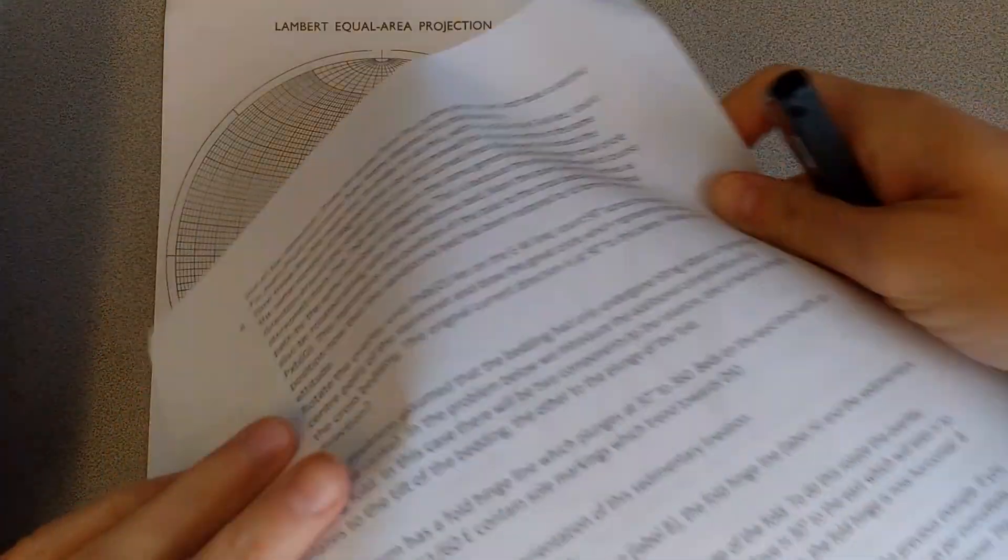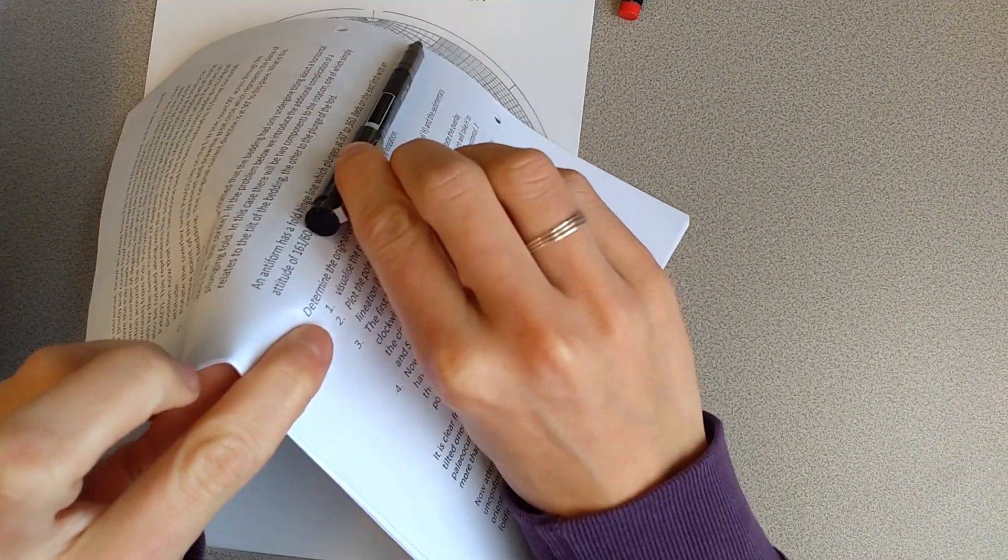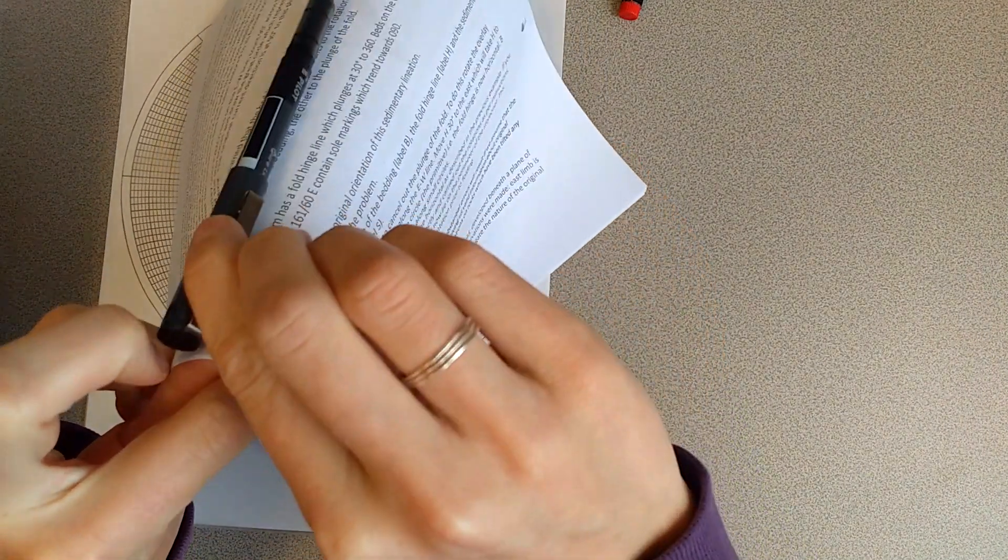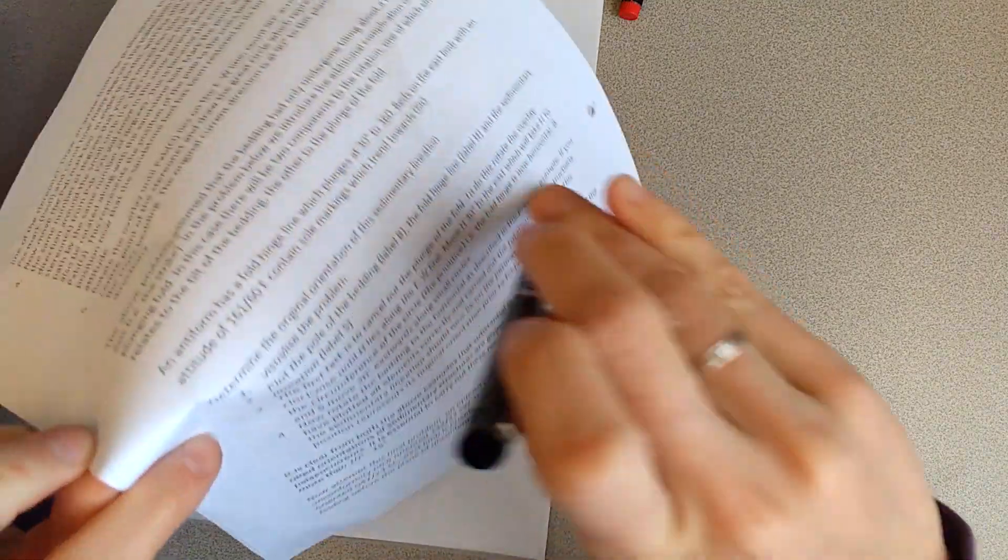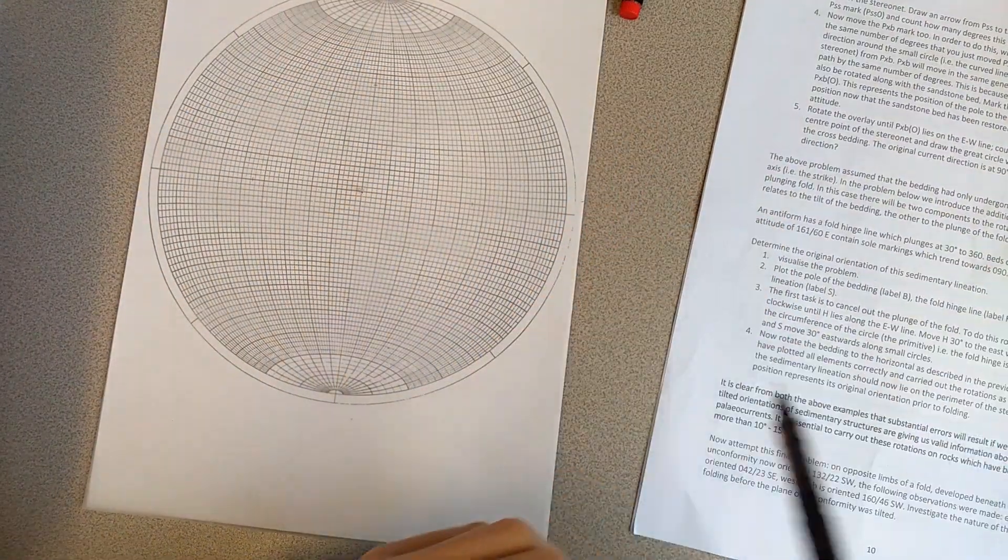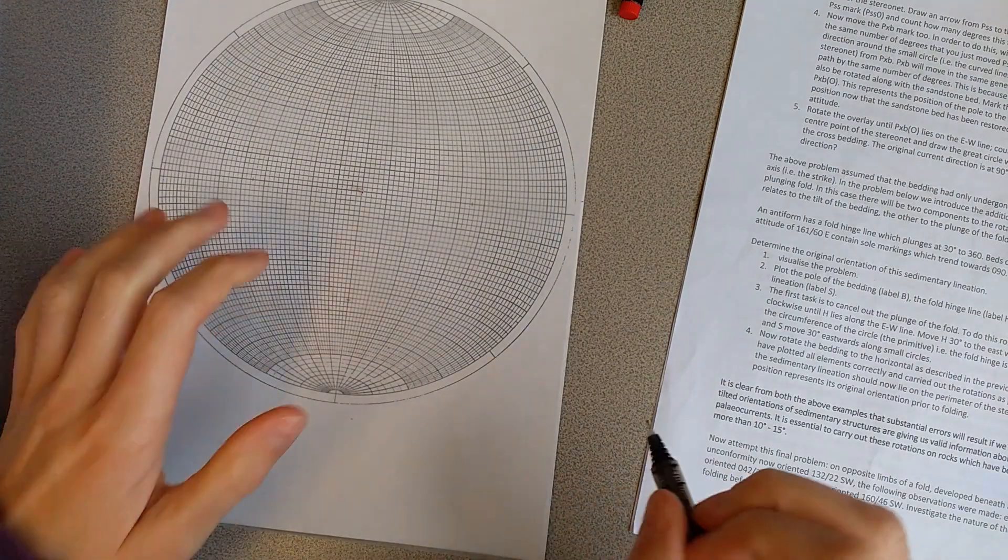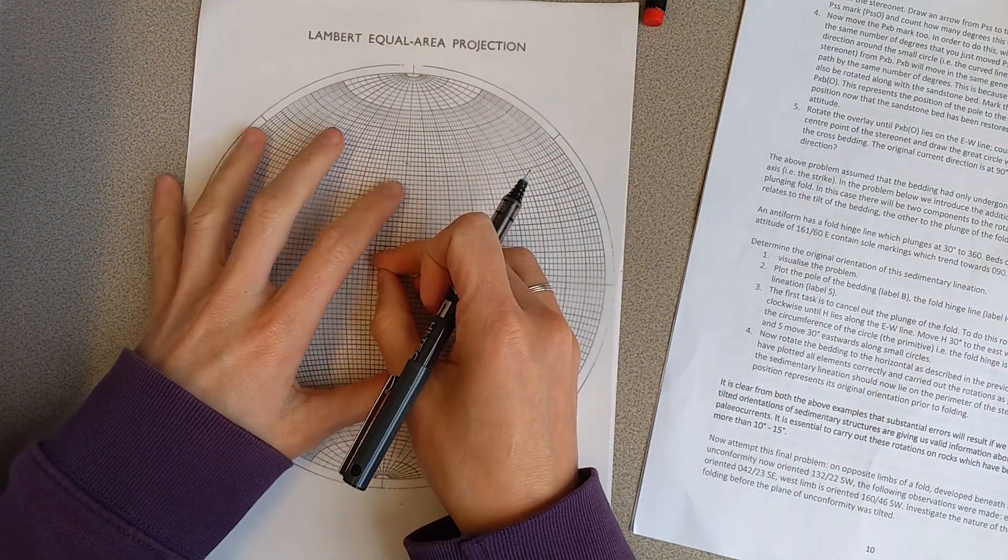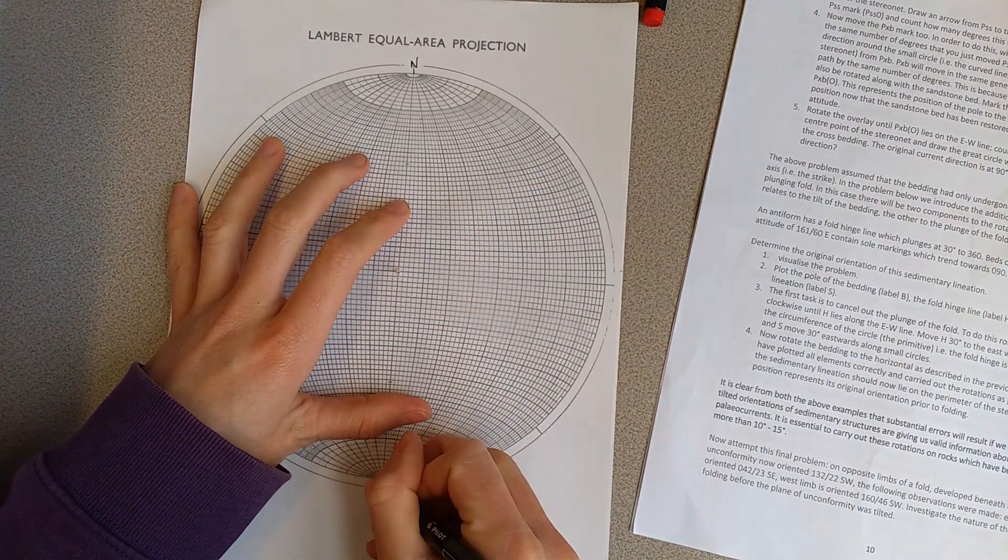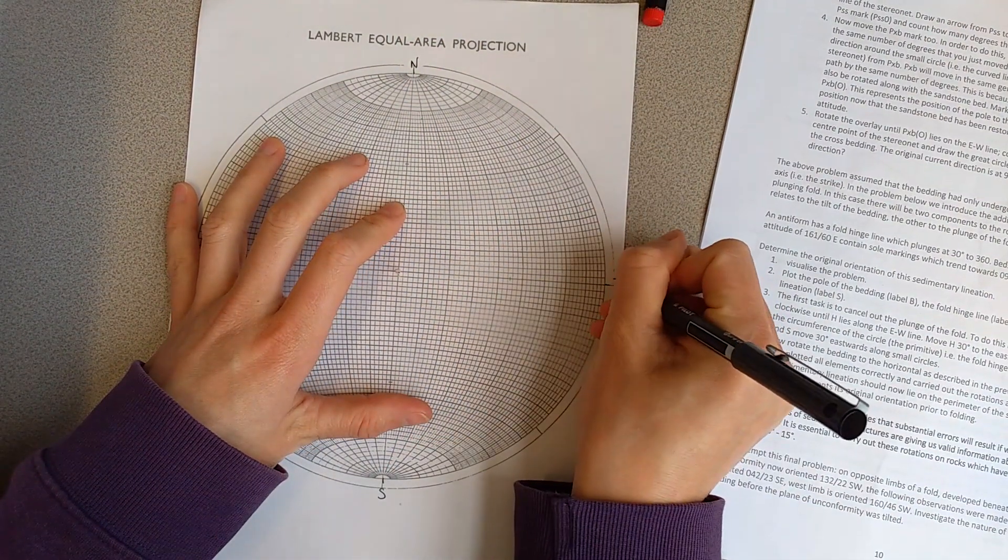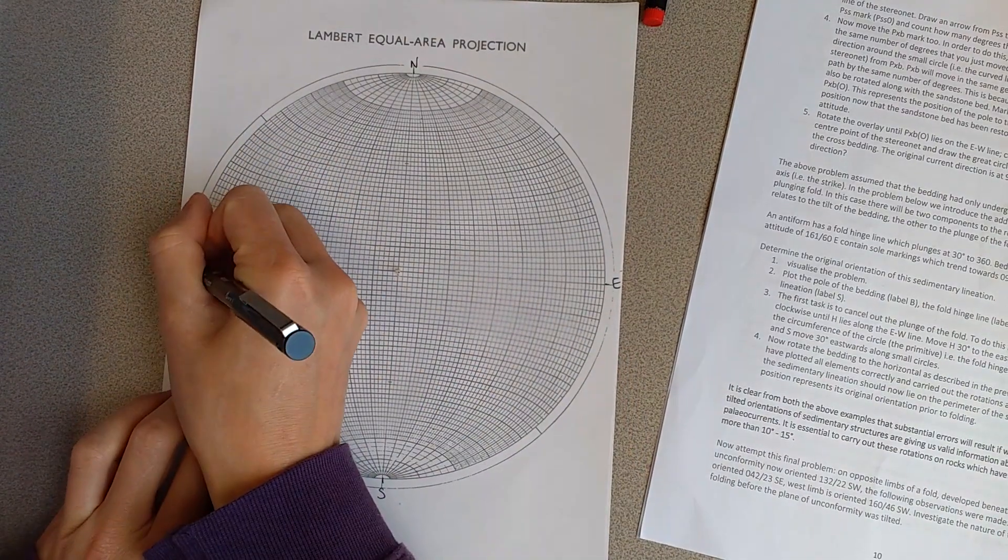So the hinge is the middle of the folded, I'm just representing by this folded paper, and the hinge line is the lineation on top of the fold. So the hinge line is plunging 30 degrees towards 360. So I'm just going to mark my north, south, east, and west.